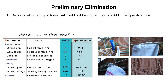The first step in that process is to begin by eliminating any of the options that could not be made to satisfy all of the specifications. If you have a look at our table of requirements, criteria, and specifications here, in the specifications column for each of these requirements we've given it a value. For example, strong grip is pull-off force in newtons, and we've specified that for all viable options to be considered in the decision-making process, we want these options to be greater than 20 newtons. Ease of use is less than 5 newtons peak user force, and long life — we want at least 200 cycles, 200 uses out of these devices.